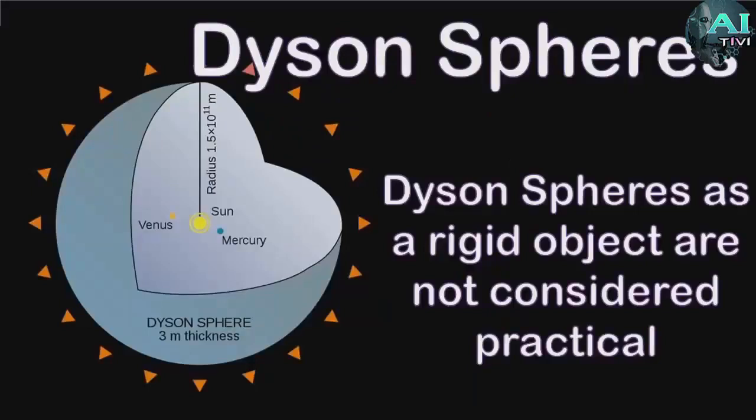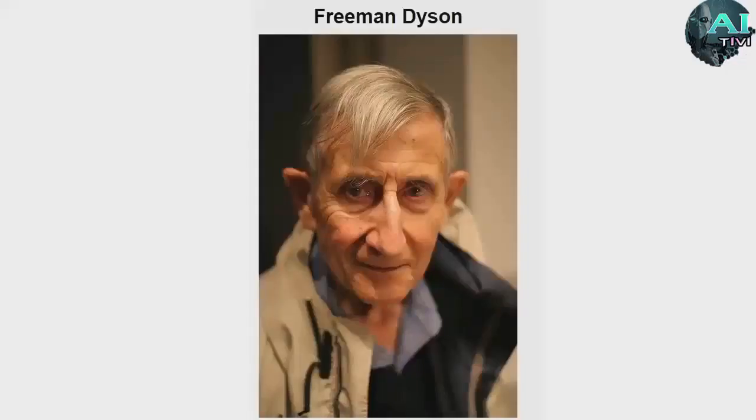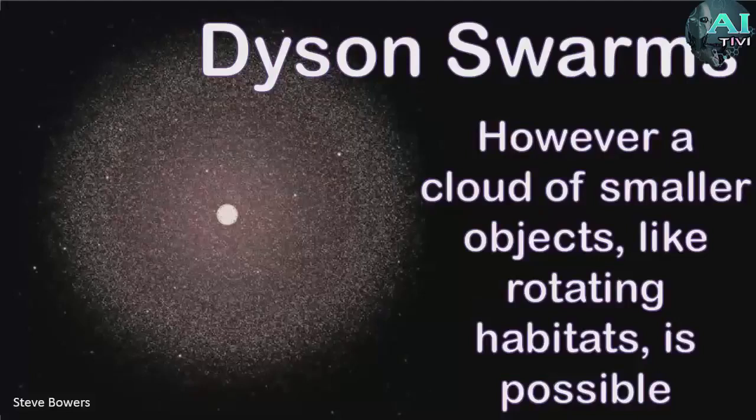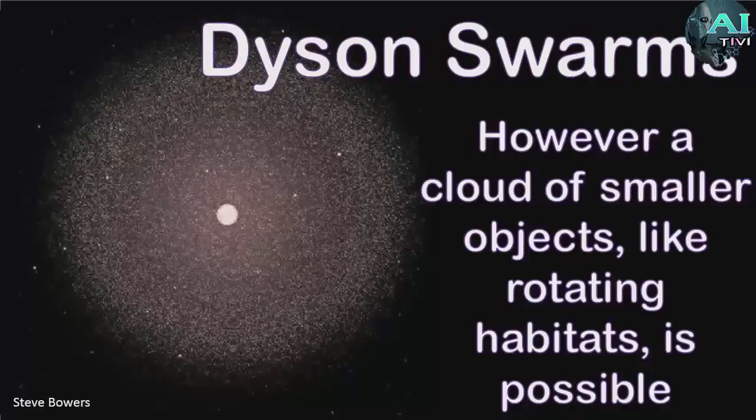Now people often picture this as a single giant hollow sphere around a star with an earth-like surface, but in reality what was pictured by Freeman Dyson and other scientists is what is often now called a Dyson Swarm to avoid confusion. Not one single rigid sphere but millions or even trillions of smaller artificial bodies orbiting the star as a cloud of satellites.